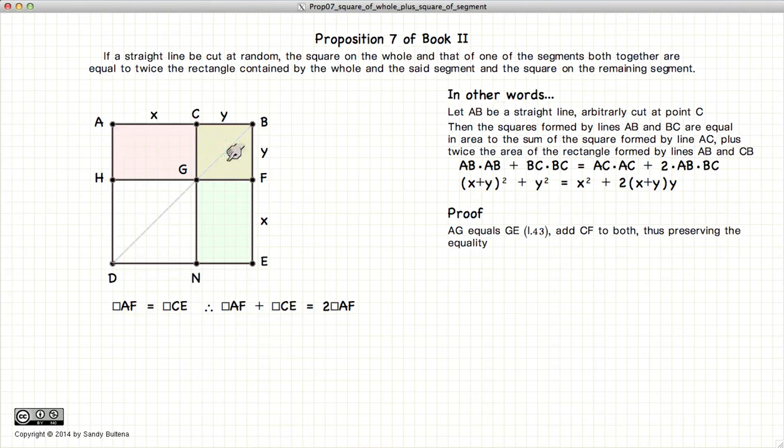In other words, AF is equal to CE, or AF plus CE is equal to twice AF.